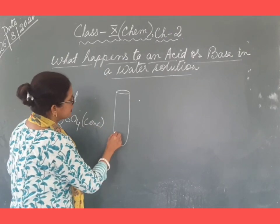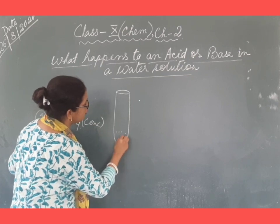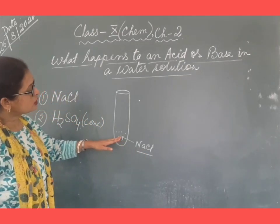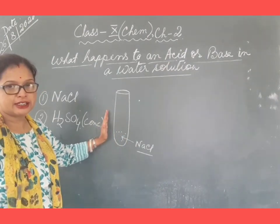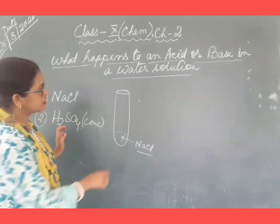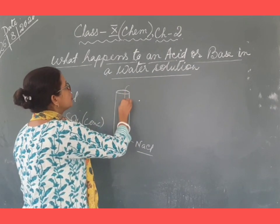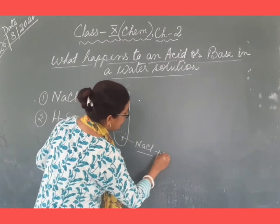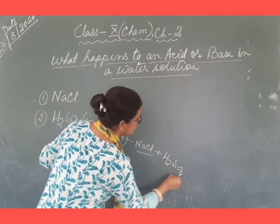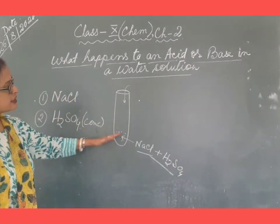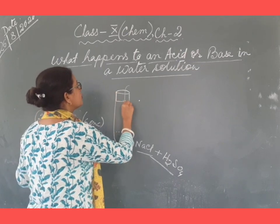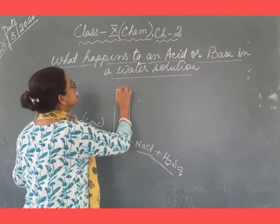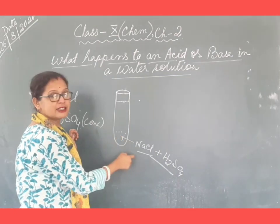First of all we will add about one gram of sodium chloride — sodium chloride is a salt we know — into a dry boiling tube. Then after adding sodium chloride, we will pour some amount of concentrated sulfuric acid very carefully. After adding the sulfuric acid, we will close the mouth of the boiling tube with a rubber cork.